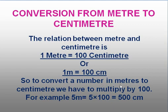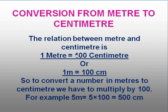To convert a number in meters to centimeters, we have to multiply it by 100. Why are we multiplying it by 100? Because 1 meter is equal to 100 centimeters. So here, to convert meter into centimeter, the number has to be multiplied by 100. For example, 5 meters is equal to 5 into 100, which is 500 centimeters.